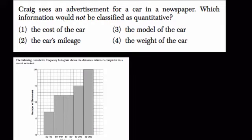Moving forward, Craig sees an advertisement for a car. Which information would not be quantitative? We're finding something that's not quantitative, and quantitative means referring to a number value. So the weight of the car, the cost of the car, and the mileage of the car are all quantitative. However, the model is something called qualitative. That model numerically doesn't really mean anything, so it's qualitative.